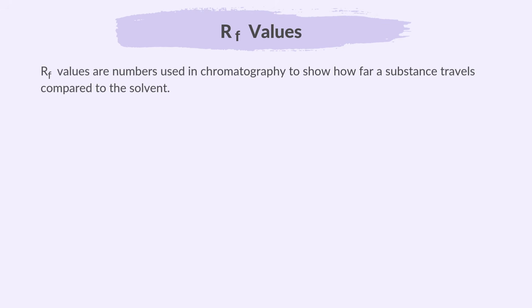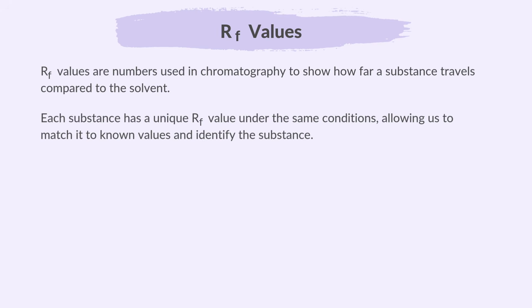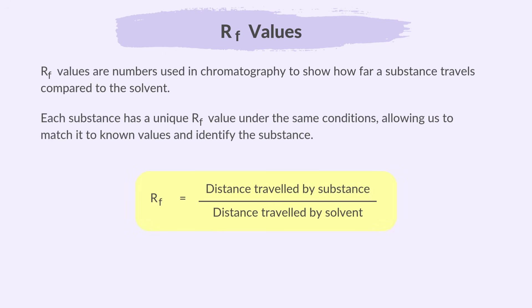Now let's learn about RF values. RF values are numbers used in chromatography to show how far a substance travels compared to the solvent. Each substance has a unique RF value under the same conditions, allowing us to match it to known values and identify the substance. We can't just measure how far the substance travels because that depends on how far the solvent moves, which can change in different experiments. Comparing the substance's distance to the solvent's distance makes it fair and helps identify the substance more accurately. The equation is: RF equals distance travelled by the substance divided by distance travelled by the solvent.